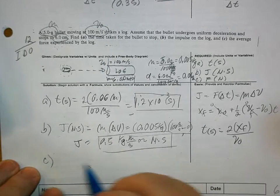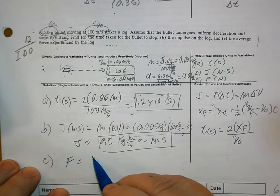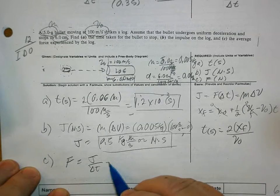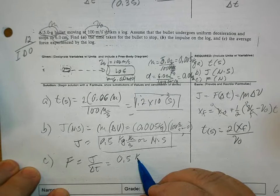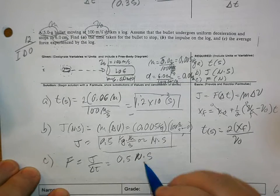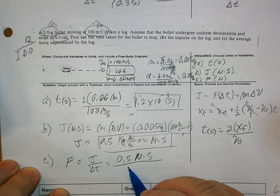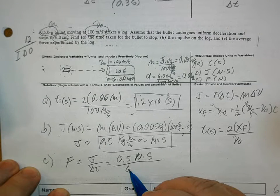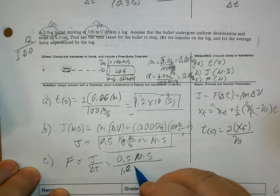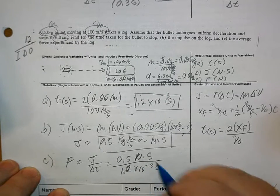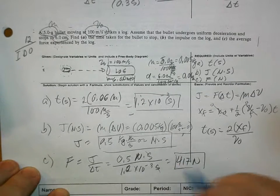And then letter C, the force. If we get it from here, this becomes the denominator: J over delta T, which is 0.5 Newton seconds divided by 1.2 times 10 to the negative 3 seconds. This cancels and the answer is 400 Newtons. Okay?